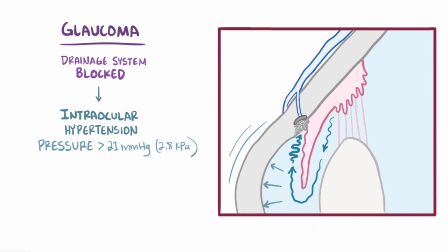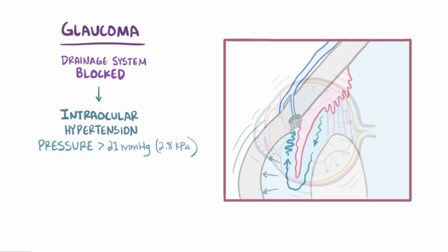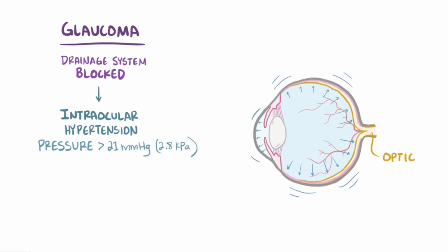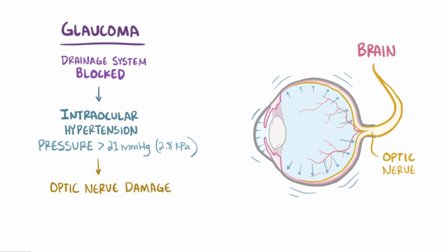This high pressure affects all the structures of the eye, including the optic nerve, which is the nerve that carries visual information from the eyes to the brain. This means that over time, as the optic nerve gets damaged, glaucoma leads to vision loss.